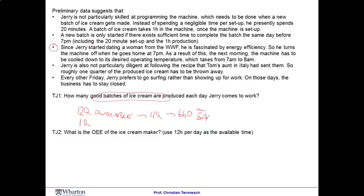So, 11 hours are available for production. 11 hours really means 660 minutes per day. If you think about how long it would take to produce a batch of ice cream, remember a batch of ice cream takes 80 minutes. These 80 minutes are 20 minutes in setup and 60 minutes of actual production. 80 minutes per batch means that we can really make 8 batches per day. This is real value add time.